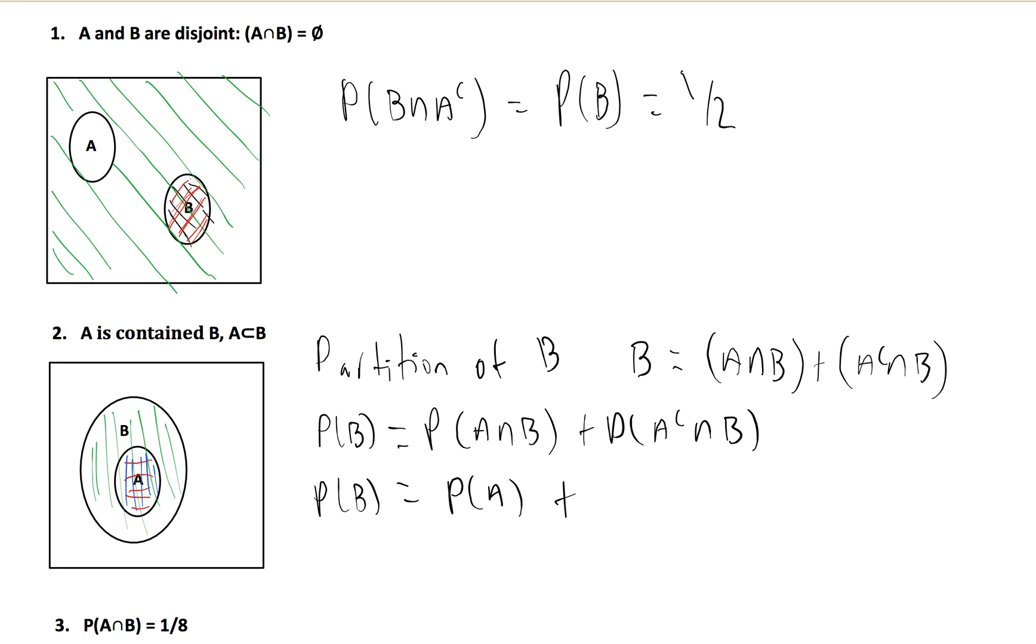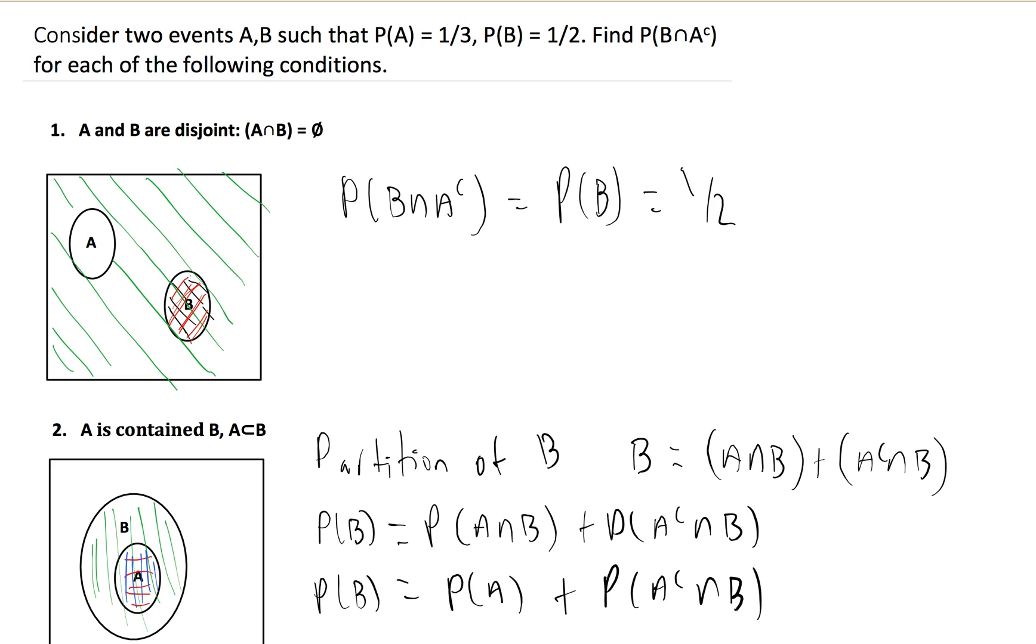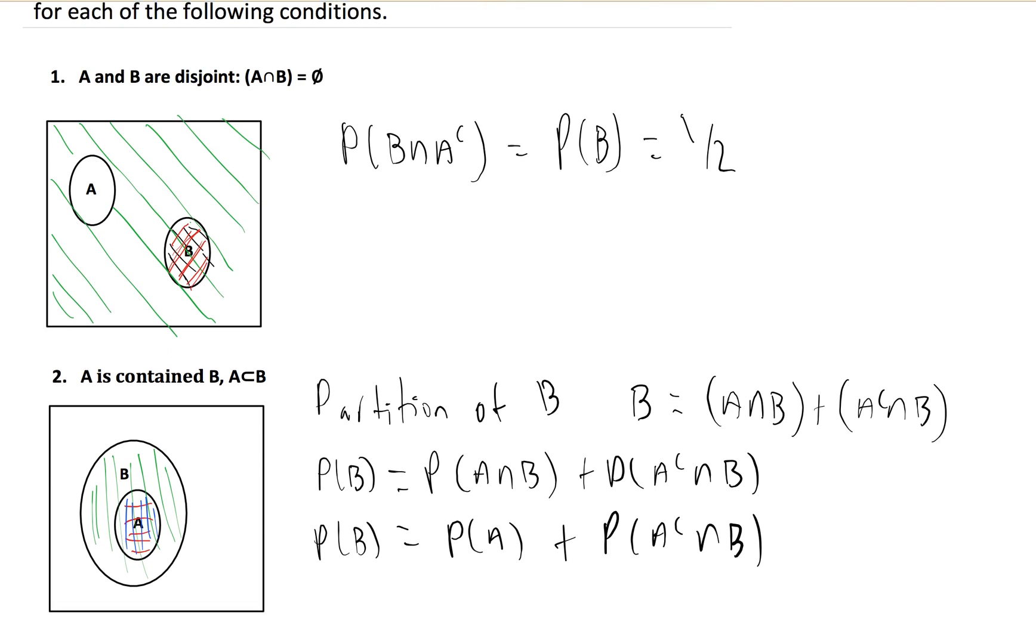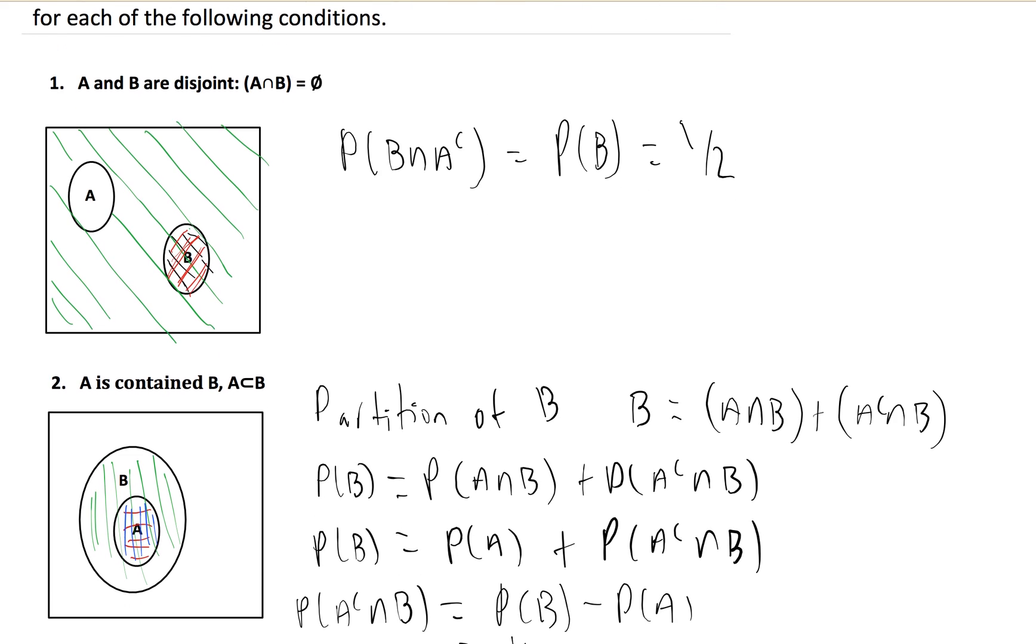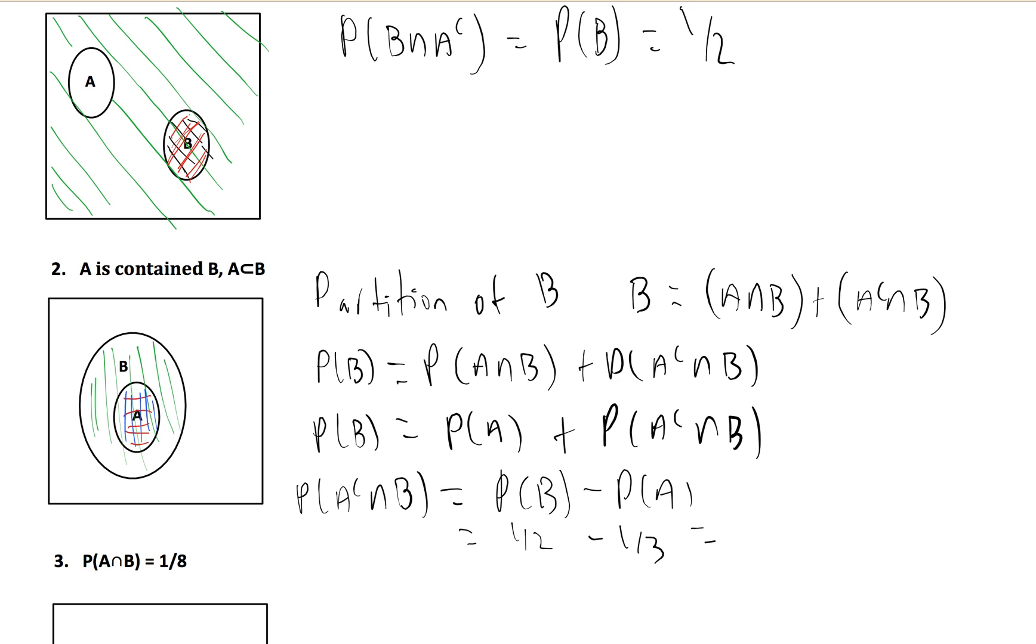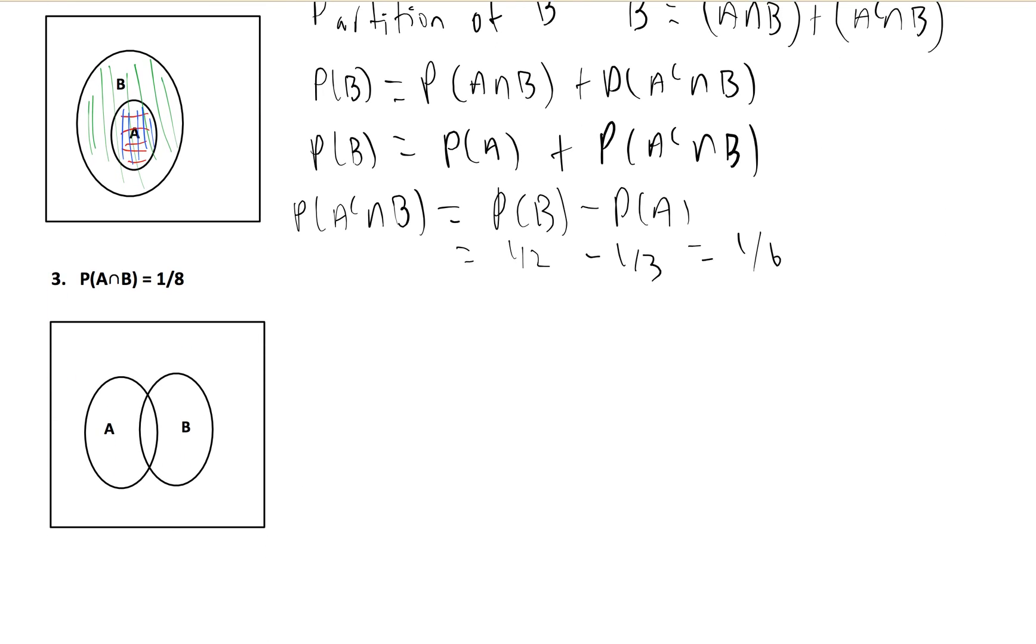So we've got the probability of B, we know the probability of A, that's also given. And we're left with our variable, which is the probability of A complement intersect B. The probability of B intersect A complement is the same thing as saying the probability of A intersect B. So we have the probability of A complement intersect B equals the probability of B, which is one half minus one third, which equals one sixth.